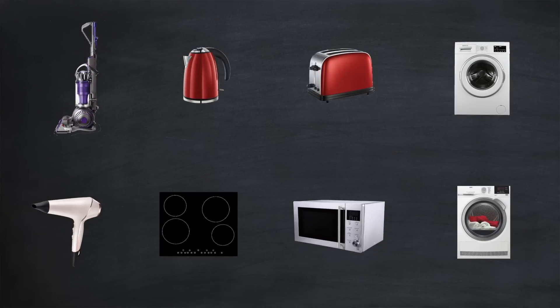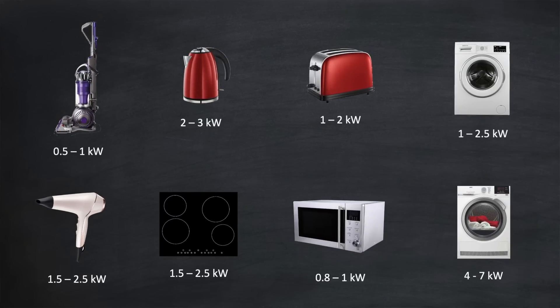Let's take a look at the power requirements for a variety of consumer appliances in your home. We've already seen that a kettle runs at two to three kilowatts. A hair dryer is roughly equivalent. A microwave is typically less than one kilowatt, but a clothes dryer comes in at a whopping four to seven kilowatts. At 40p per kilowatt hour, that's almost three pounds per hour to operate that machine.